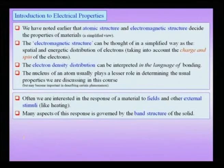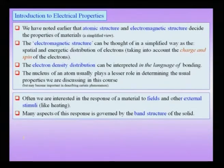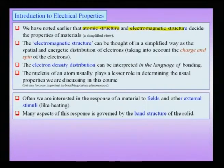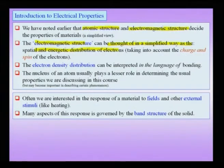If I consider electrical properties, two important factors come into play when we want to understand the properties of materials. At the heart of all properties is what we may call the electromagnetic structure. Crudely, we divide this into the atomic structure — where we worry about atomic entities and their positions — and what we call the electron distribution. This electromagnetic structure can be thought of as the spatial and energetic distribution of electrons, taking into account the charge and the spin of the electrons.